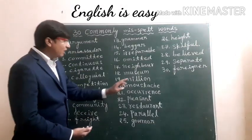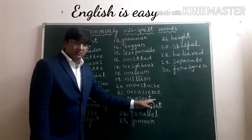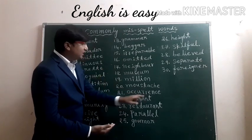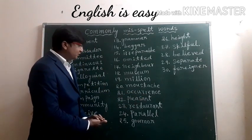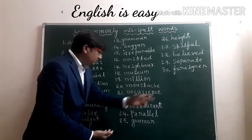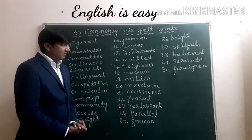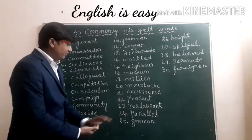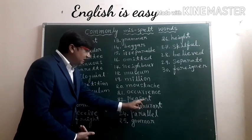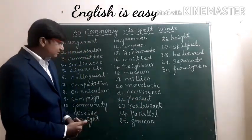Twenty-first: Occurrence. In this word, we have double C and double R. But children may miss one C or one R. So we should not miss them — in this word, C comes twice and R comes twice. Twenty-second: Pleasant. We do a mistake here — we write P-L-E-A-S-E-N-T, putting E in place of A. But it is A, not E.